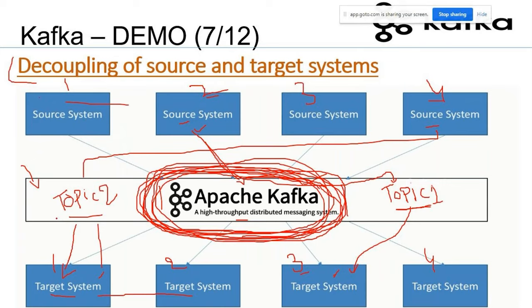IBM MQ has its own strengths — for example, in banking or financial systems handling highly sensitive, secure data where throughput is not the main concern, IBM MQ is a good choice. But Apache Kafka is completely different: in the big data world, Kafka is the best tool for messaging because it can handle streams and millions of messages per second.